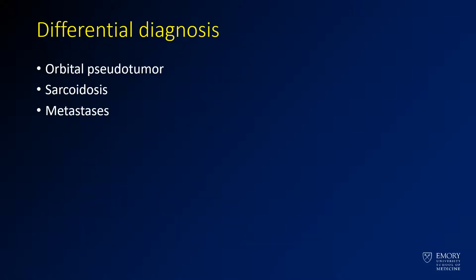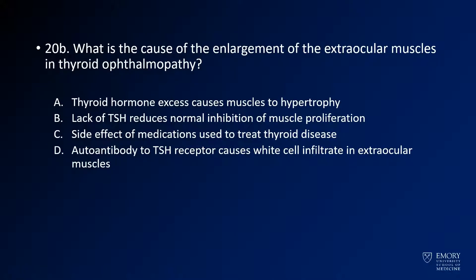The differential diagnosis for a case like this includes orbital pseudotumor, other inflammatory diseases like sarcoid, lymphoma, and metastases. As mentioned, the cause of the enlargement of the extraocular muscles is the autoantibody to the TSH receptor. That's what causes the white cell infiltrate to the extraocular muscles.